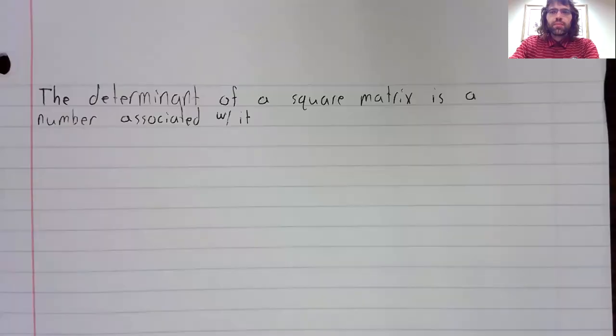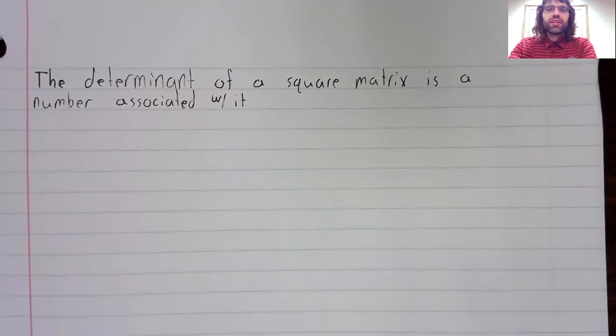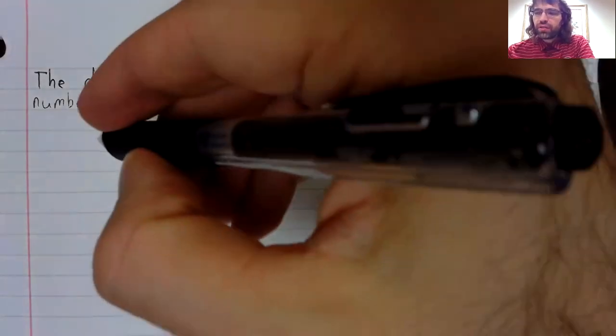That being said, we will need determinants for one thing in this class. Admittedly, for one thing only. So let's dive in and let's define a determinant. The determinant of a square matrix is a number associated with it. The determinant is defined inductively.